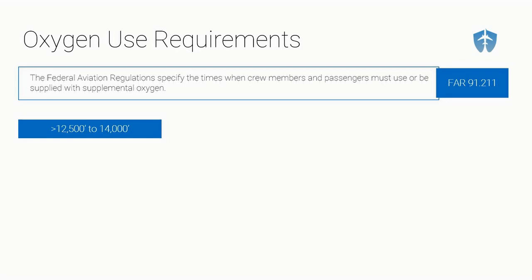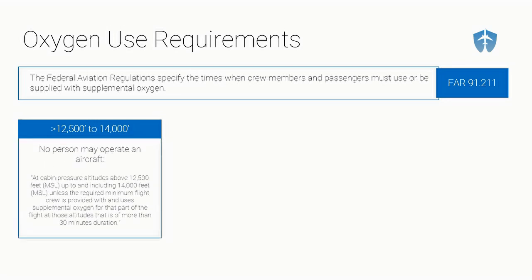First, we're going to look at the different altitudes at which you need to use supplemental oxygen, and whether it's required for just the crew members — the pilot and co-pilot — or also the passengers. The first rule: if you are flying above 12,500 feet to 14,000 feet MSL, the regulation says no person may operate an aircraft at these altitudes unless the required minimum flight crew is provided with and uses supplemental oxygen.